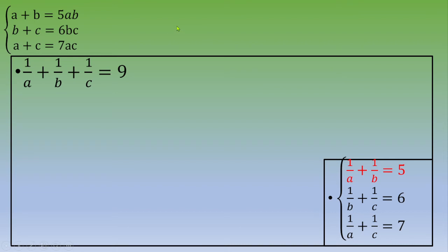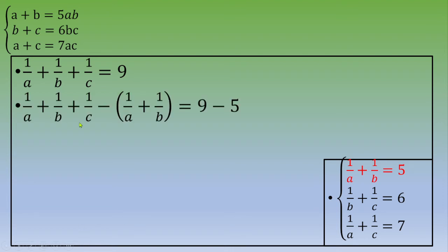Now we want to find the individual values of A, B, and C. To find C, we subtract the first equation of the system. We have 1 over A plus 1 over B plus 1 over C minus (1 over A plus 1 over B) equals 9 minus 5. Simplifying, we get 1 over C equals 4, so C equals 1 fourth.